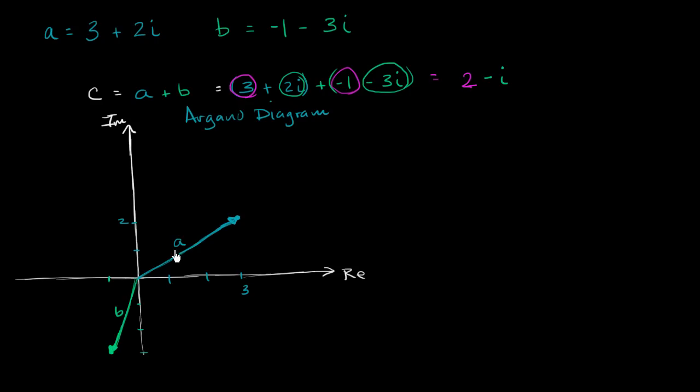And now when we add a plus b, you could add them the exact same way that you would add vectors. You take the tail of b, or you can essentially shift b over. So you take the tail of b and you put it at the head of a.